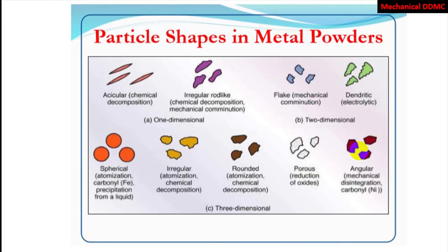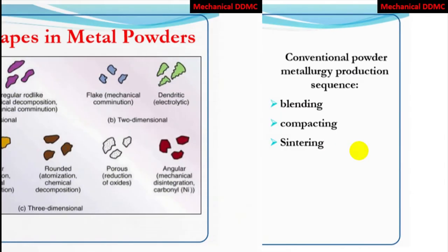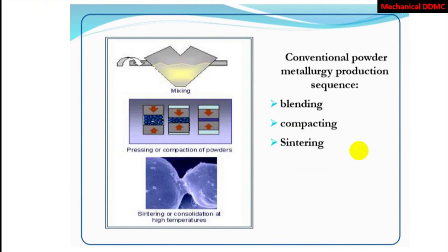Particle shapes in metal powders: there are characteristics of metal powders — some angular, irregular, flake-like, dendritic, spherical, regular, and other shapes. In the conventional powder metallurgy production sequence, blending, compacting, and sintering are the main steps.